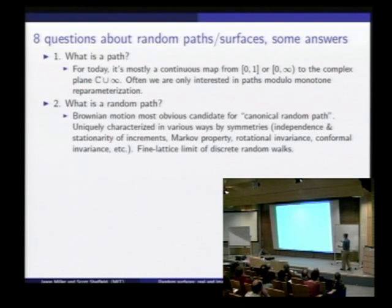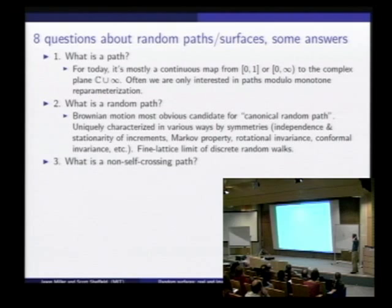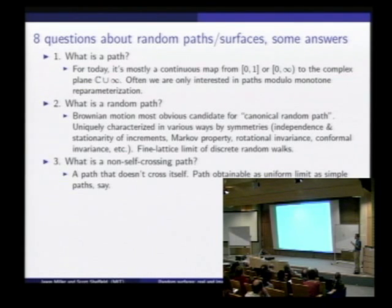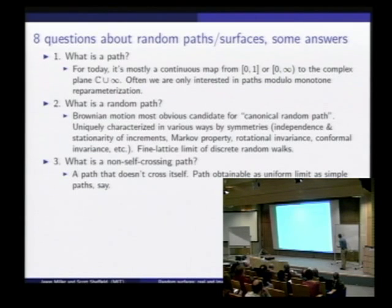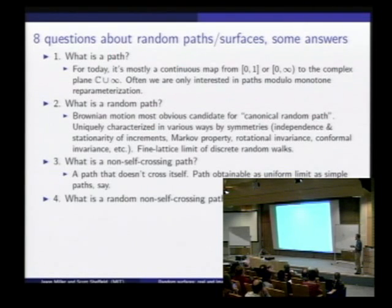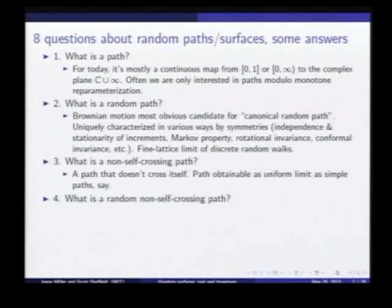Brownian motion is also the fine lattice limit of discrete random walks. If I take a very fine grid and do a simple random walk on that, it's going to look like Brownian motion in the limit. Now, what is a non-self-crossing path? That is a path that doesn't cross itself — a path you can obtain as a uniform limit of simple paths. A path that comes and bounces off of itself I'll consider non-self-crossing, but something that clearly crosses itself is not.